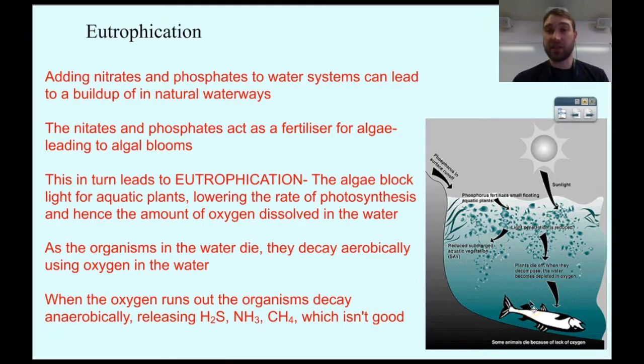As the organisms die, they break down themselves, and they break down initially aerobically, so that means there's a lot of oxygen available, so they break down into aerobic decay products. But you run out of oxygen pretty quickly, so you get anaerobic decay products, things like hydrogen sulfide, which is rotten egg gas, ammonia, which is quite smelly, and toxic methane, which is a global warming gas.